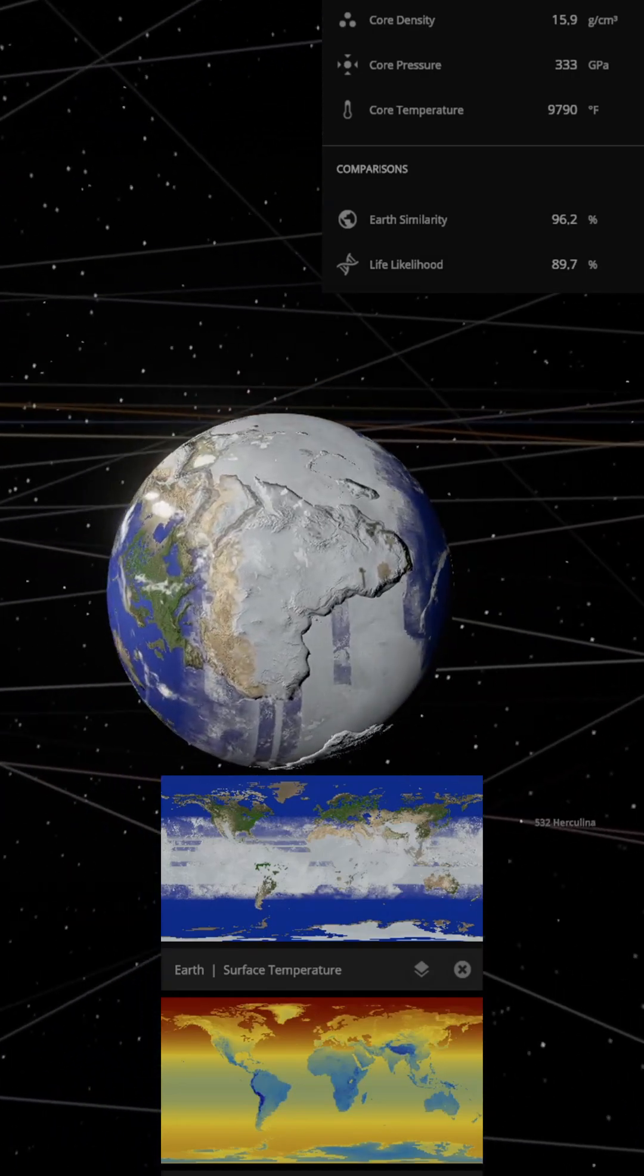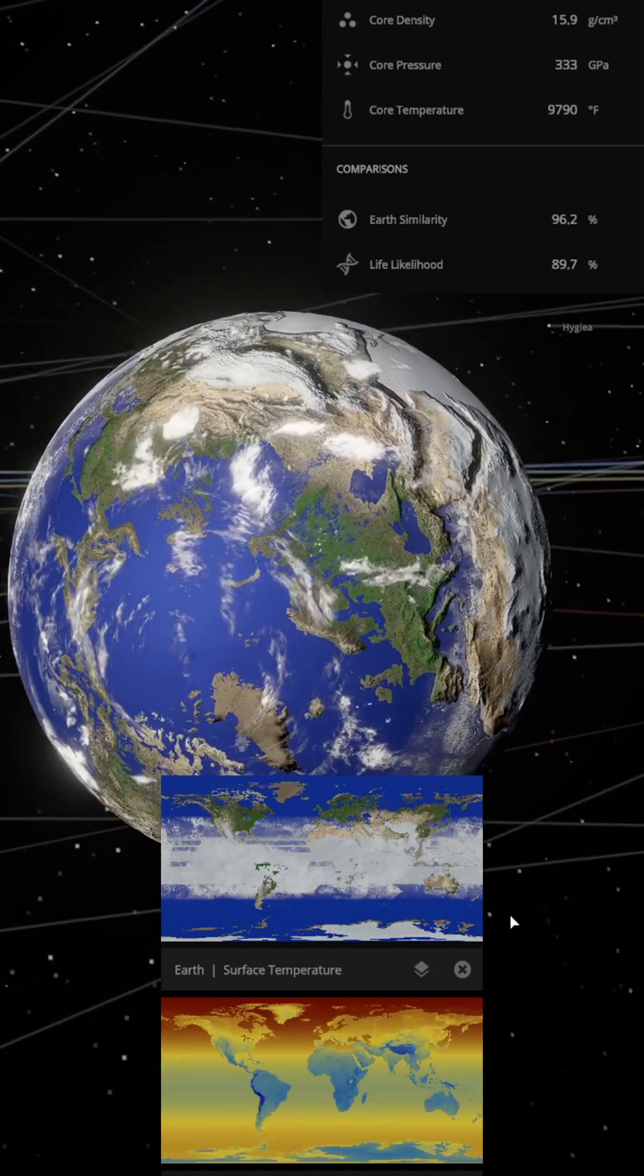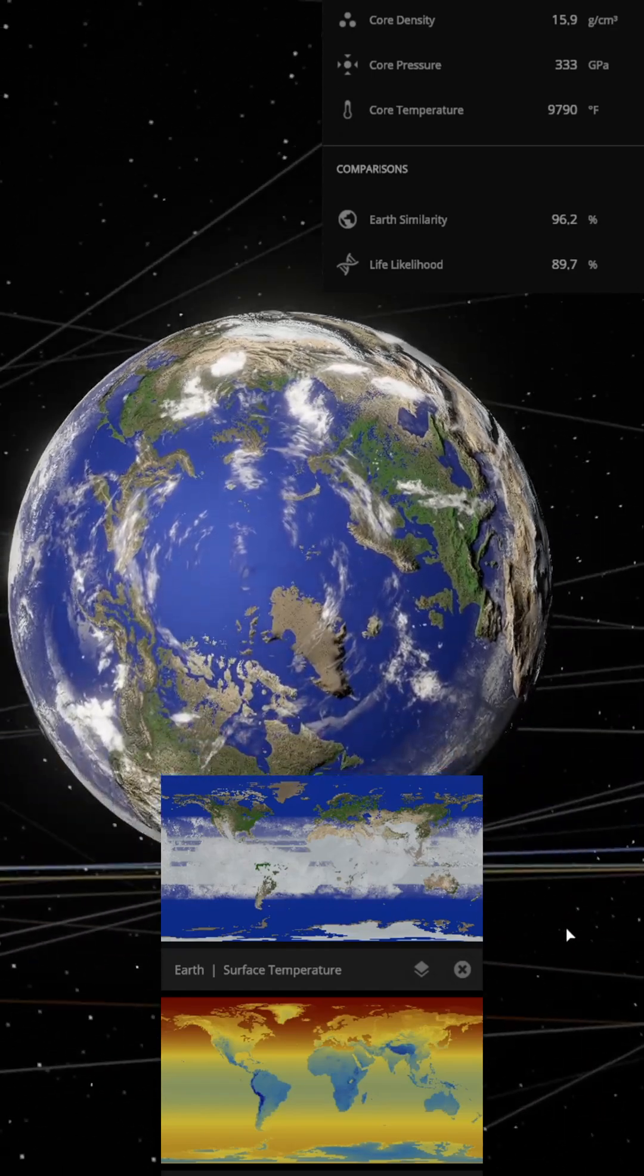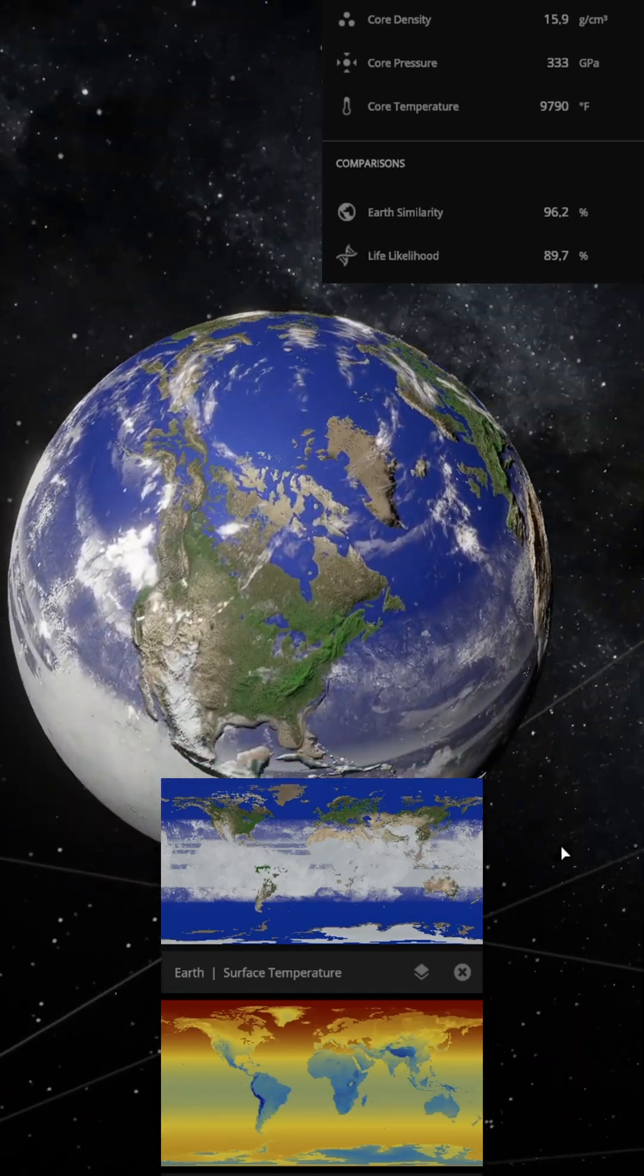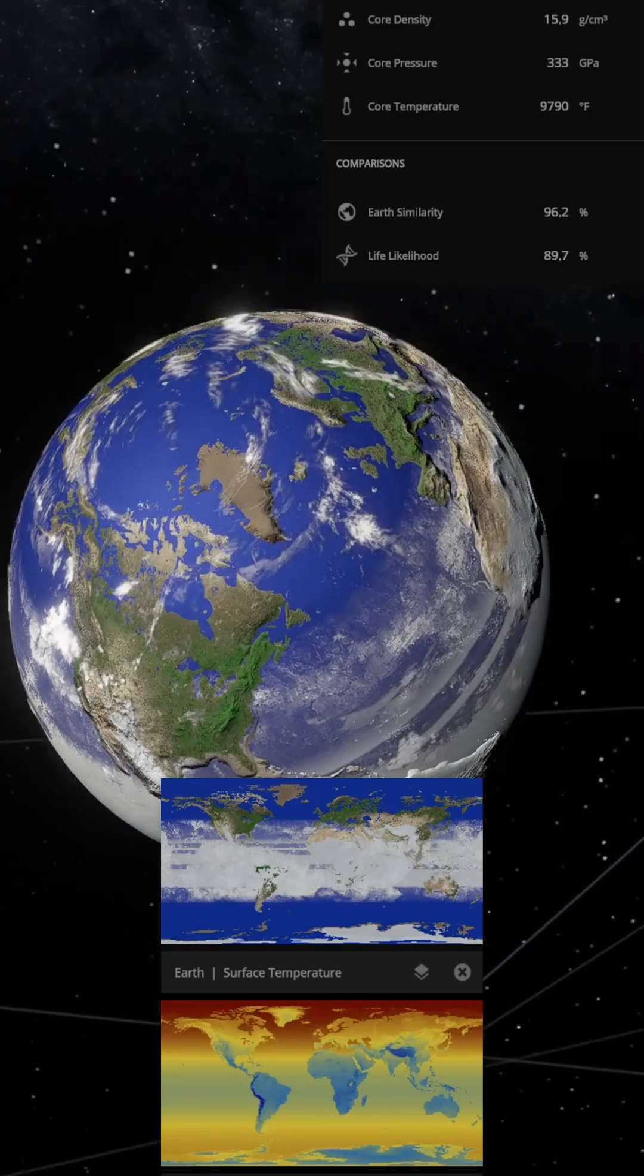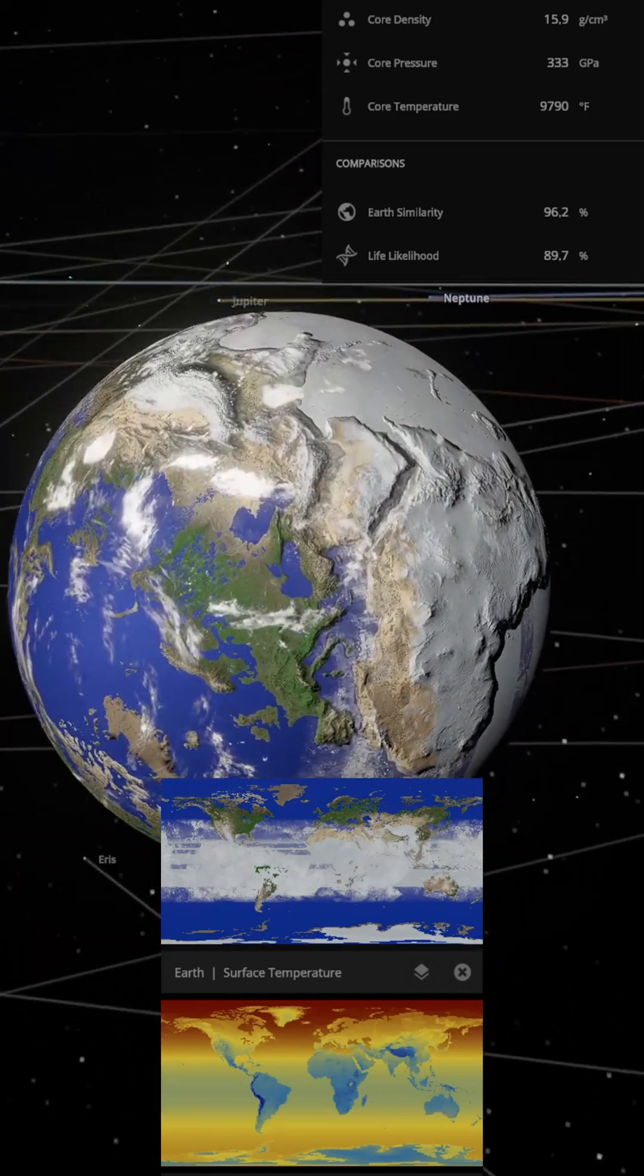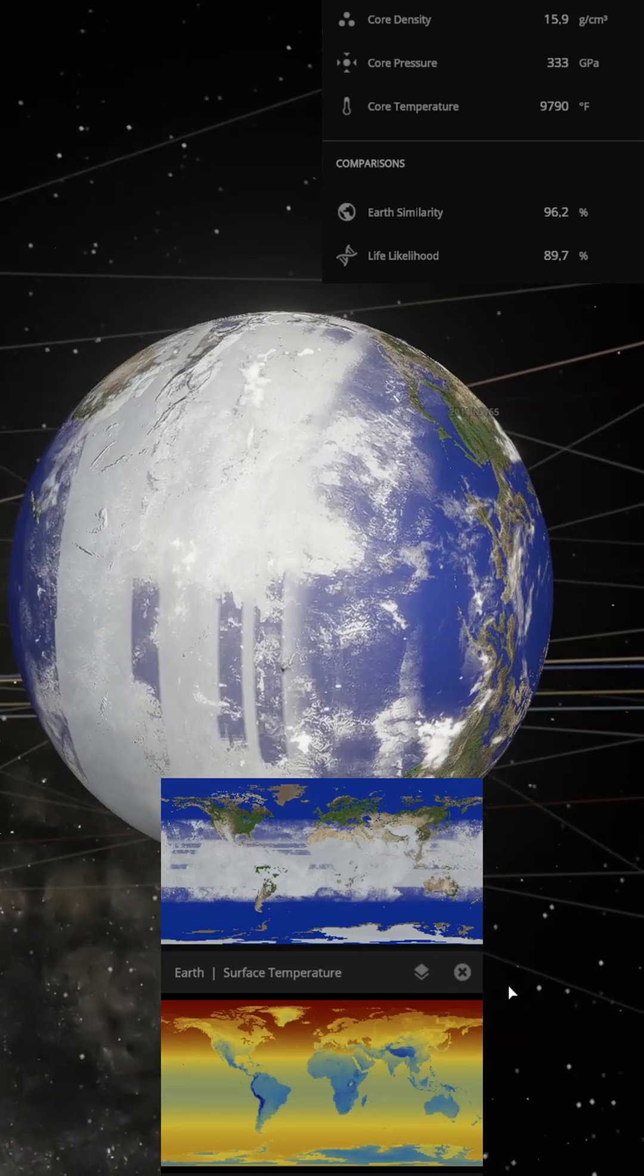When the North Pole points toward the sun, the entire northern hemisphere experiences a superpolar day lasting half a year. Surface temperatures rapidly rise above 60 degrees Celsius, seawater evaporates on a massive scale, and vegetation withers and dies.